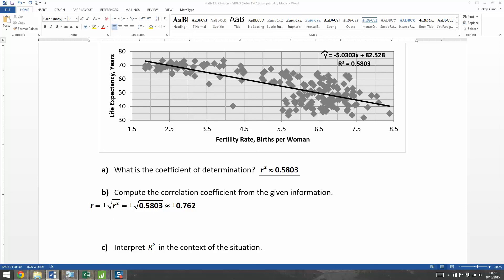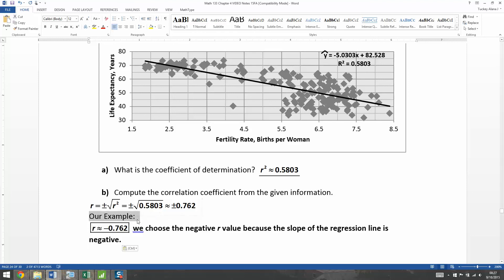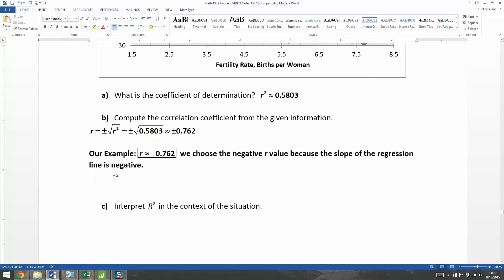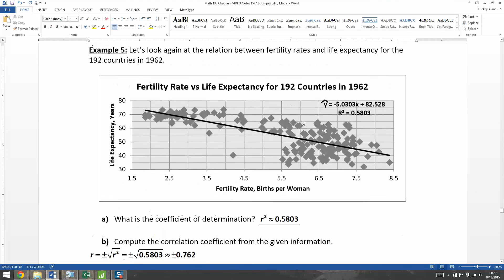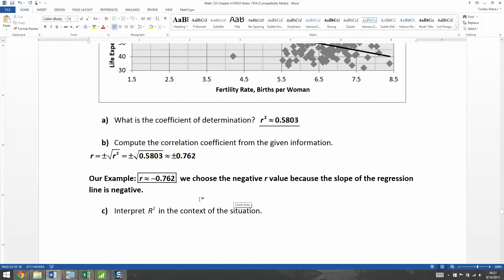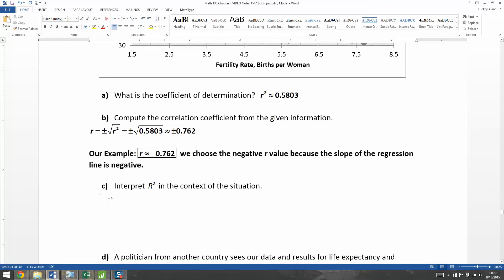All right, R is plus or minus the square root of R-squared, which means it's either positive or negative, the square root of 0.5803, which means it's plus or minus 0.762. So for us, in our example, our example has it so that R is negative 0.762. We choose the negative R value because the slope of our regression line is negative. You can see it's negative because it's that -5.0303 that we already interpreted in section 4.2.